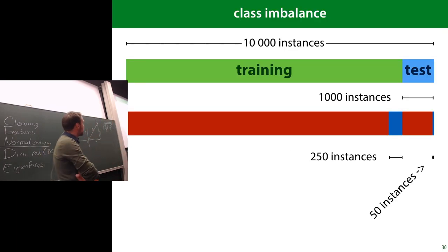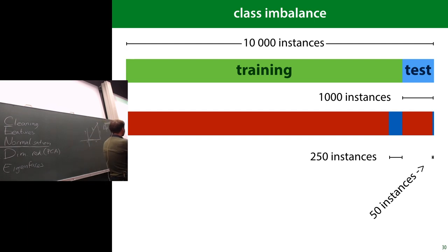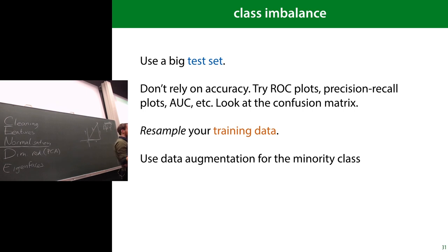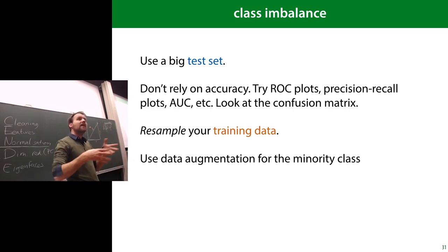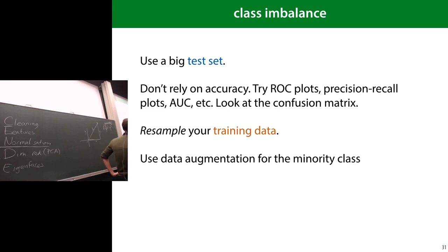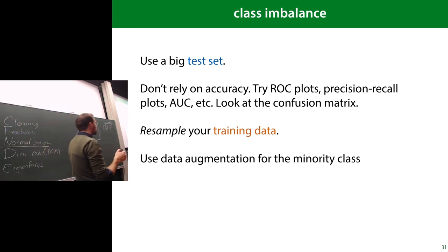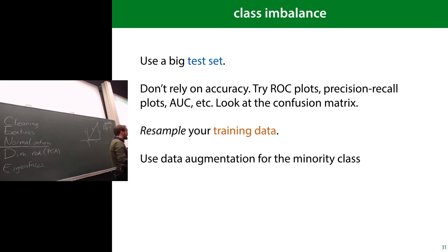Finally, class imbalance. When doing machine learning on real data, you'll probably run into this. Your test set should reflect your production environment — so if there's a class imbalance in production, your test set must have it too. Make sure the test set is large enough to include enough minority-class examples. Use metrics like ROC plots rather than accuracy. Then you can manipulate your training data to try to improve performance.